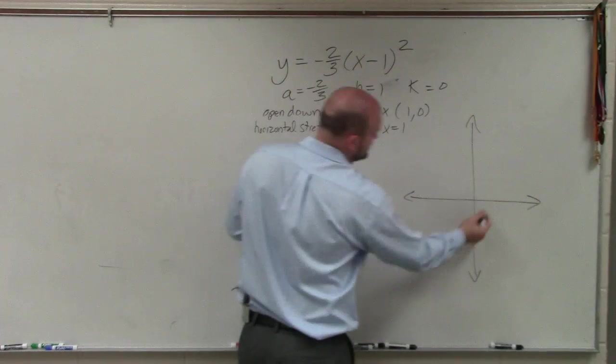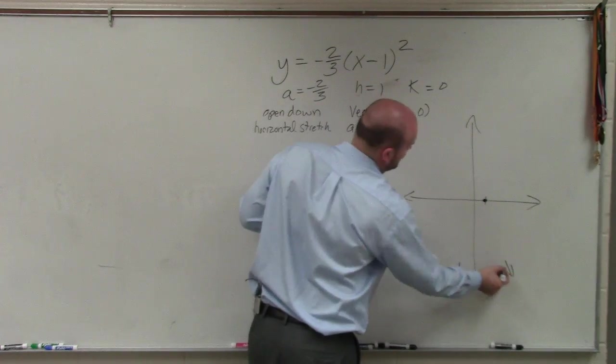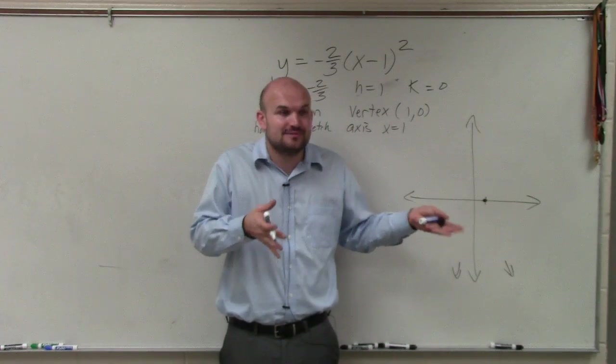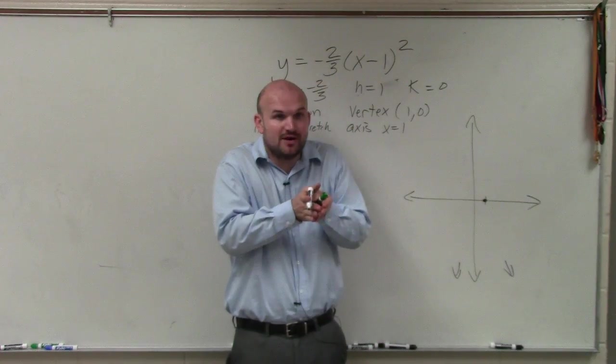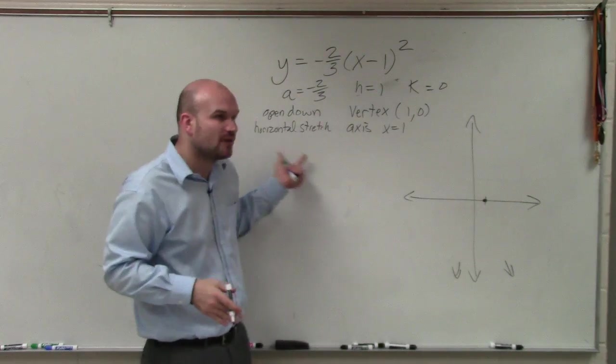Well, I know my vertex is (1,0), so that's going to go right there, and I know my graph opens down. However, I can't use the parent graph like I did last problem. Remember last problem, I just said use the parent graph, over 1, up 1, right? Well, I can't say over 1, down 1, because now I have this compression.